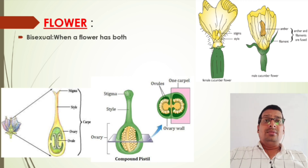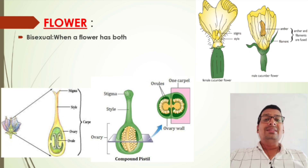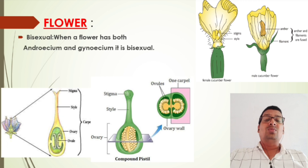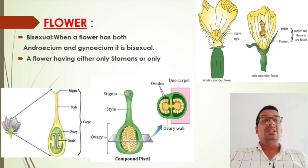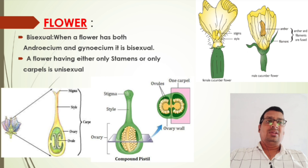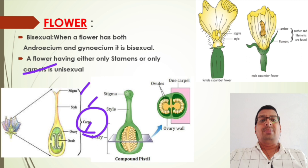Generally flowers are bisexual, but in some plants they are unisexual. A bisexual flower has both androecium and gynoecium. In unisexual flowers, they have either only stamens or only carpels. The carpel consists of stigma, style, and ovary.